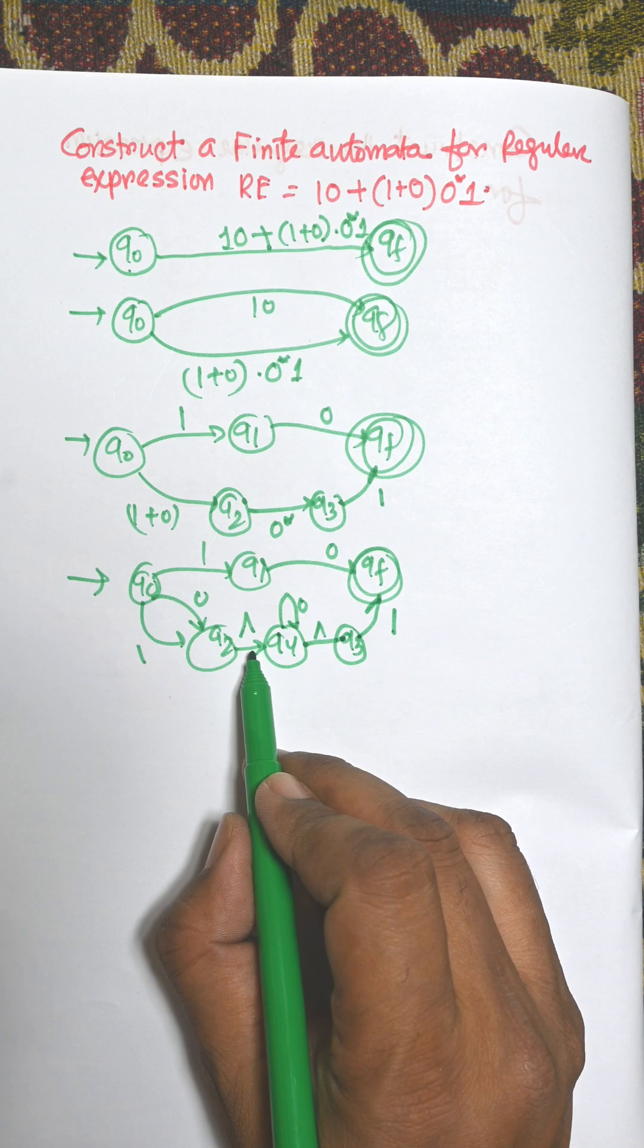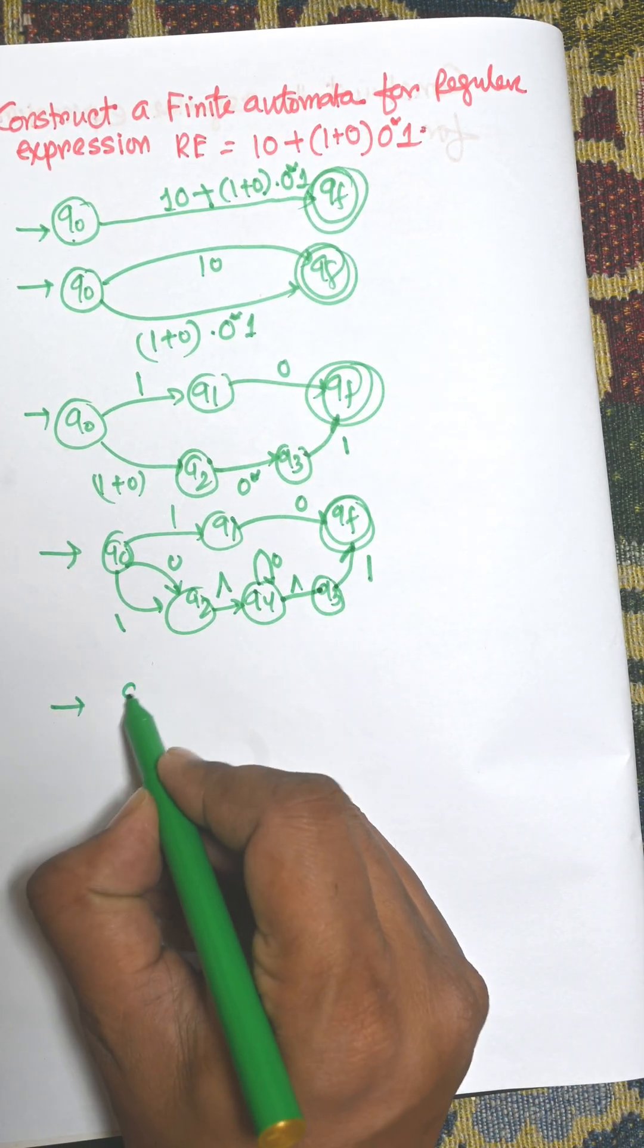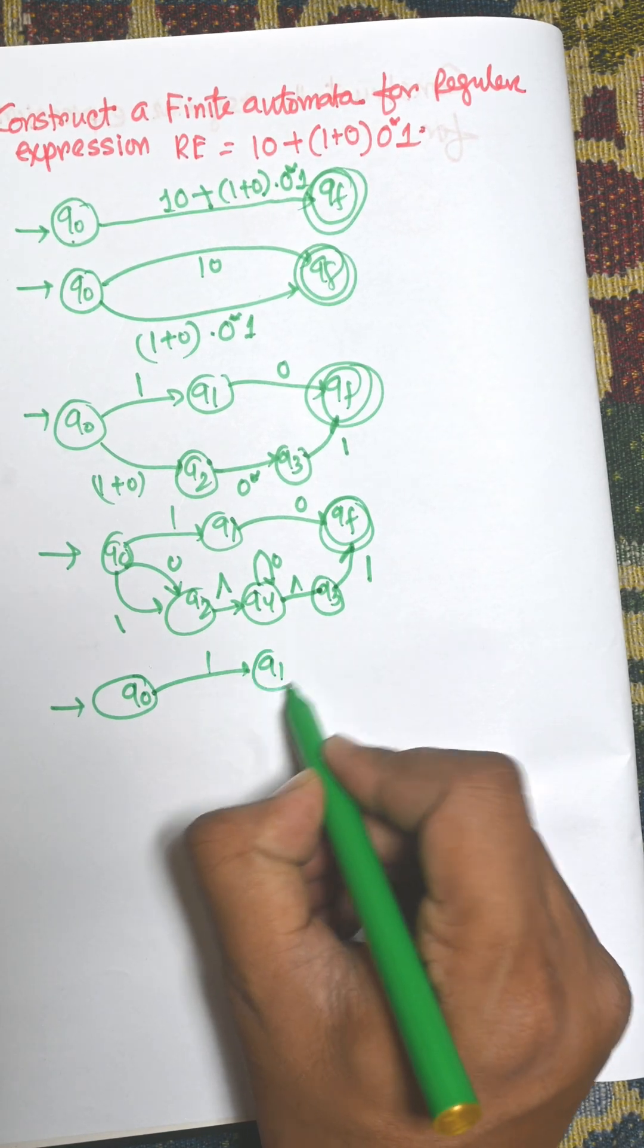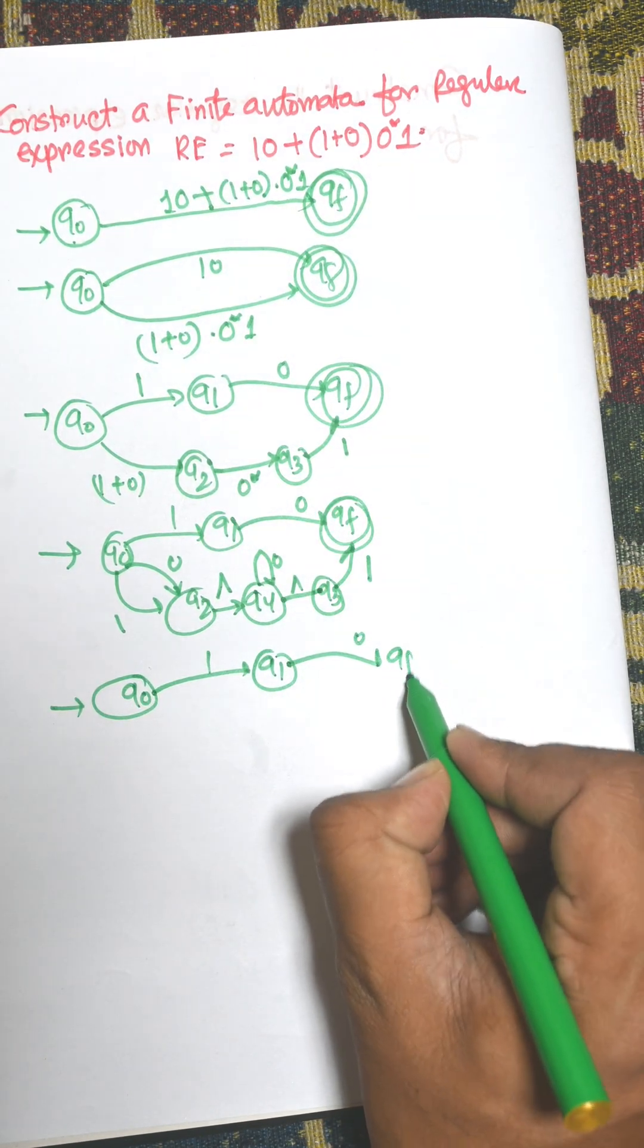Now we need to delete empty symbols. That's why the new set is q0 to q1, then q1 to 0 that is equal to qf.